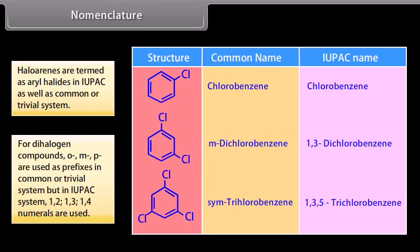For dihalogen compounds, ortho, meta, and para are used as prefixes in common or trivial system, but in IUPAC system, 1-2, 1-3, and 1-4 numerals are used.